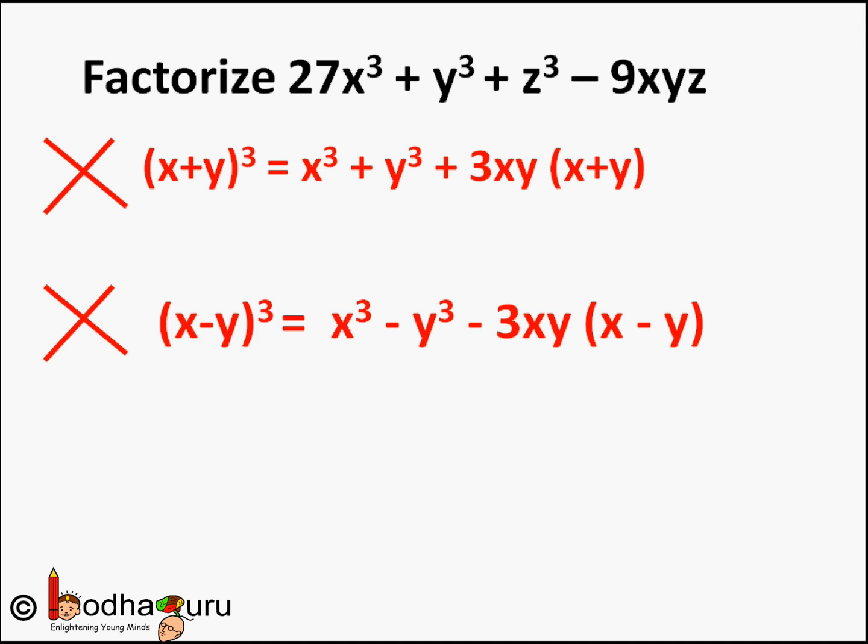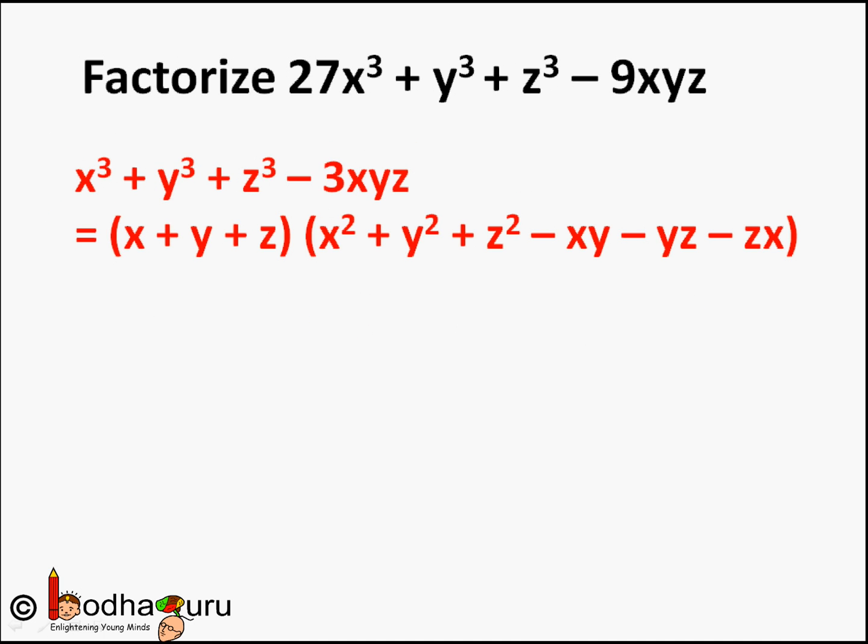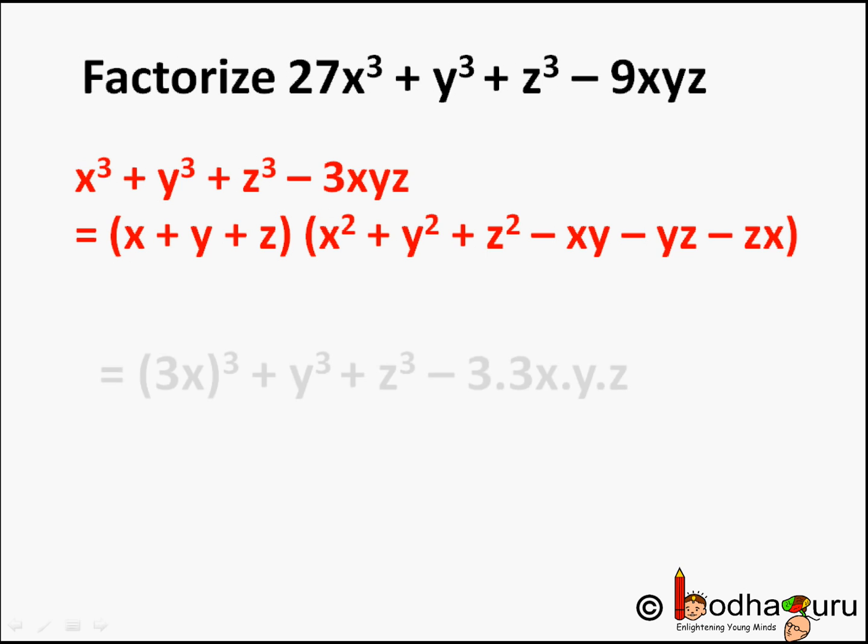Let us see if it looks similar to Identity 8, which is x³ + y³ + z³ - 3xyz = (x + y + z)(x² + y² + z² - xy - yz - zx). It's a very simple pattern. So 27x³ + y³ + z³ - 9xyz can be written as—look, start from leftmost—27x³ is (3x)³, y³ is y³, z³ is z³, and 9xyz is 3·3x·y·z. Yes, it matches Identity 8.